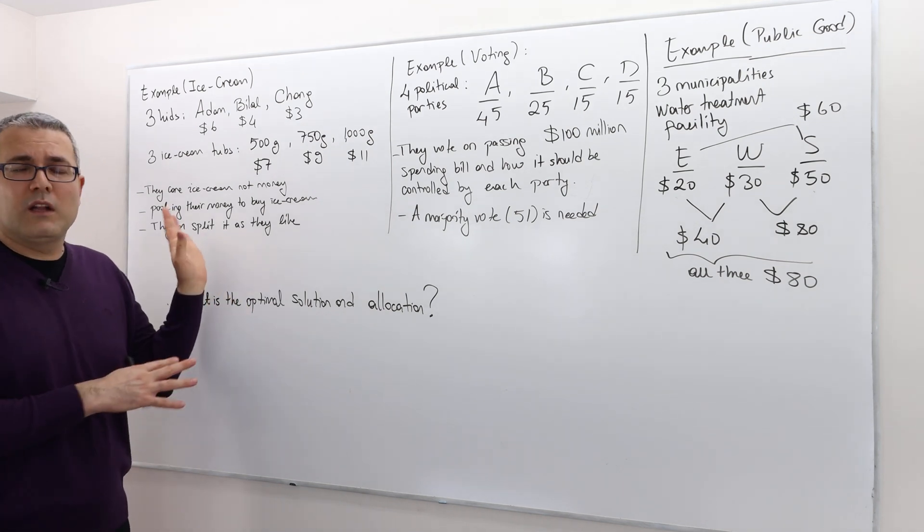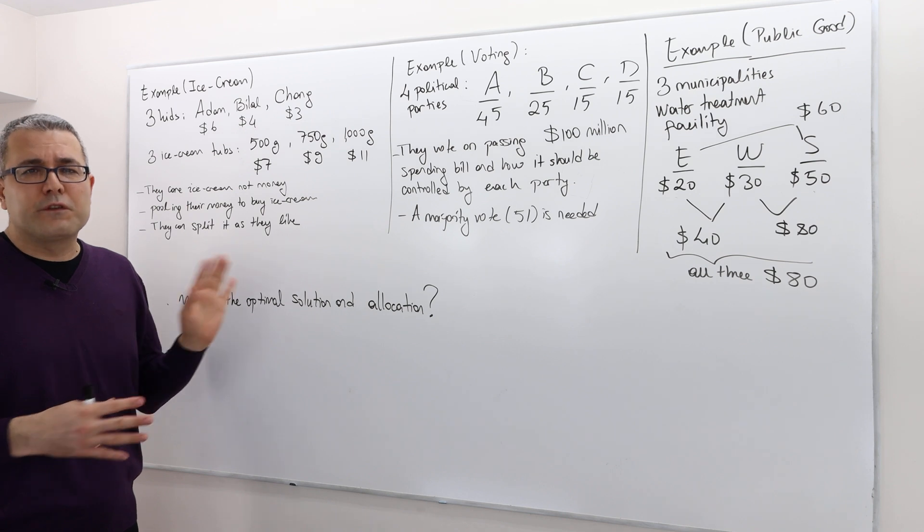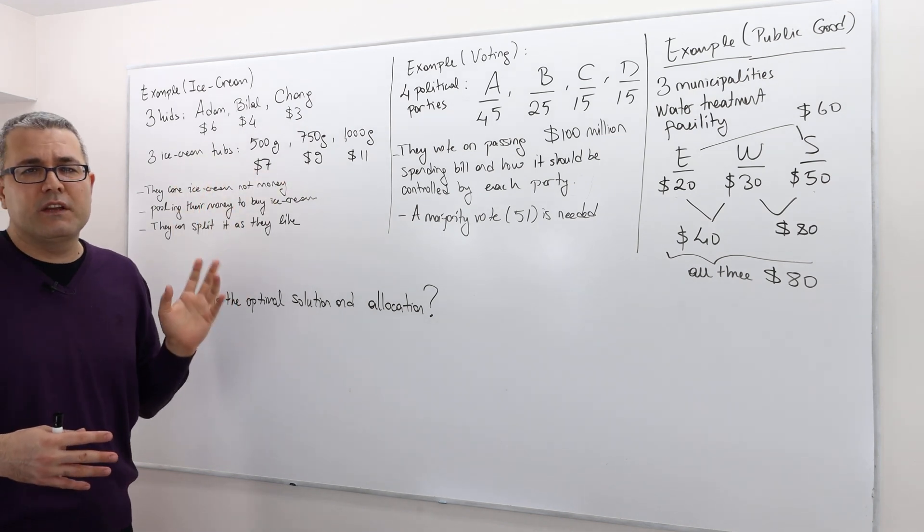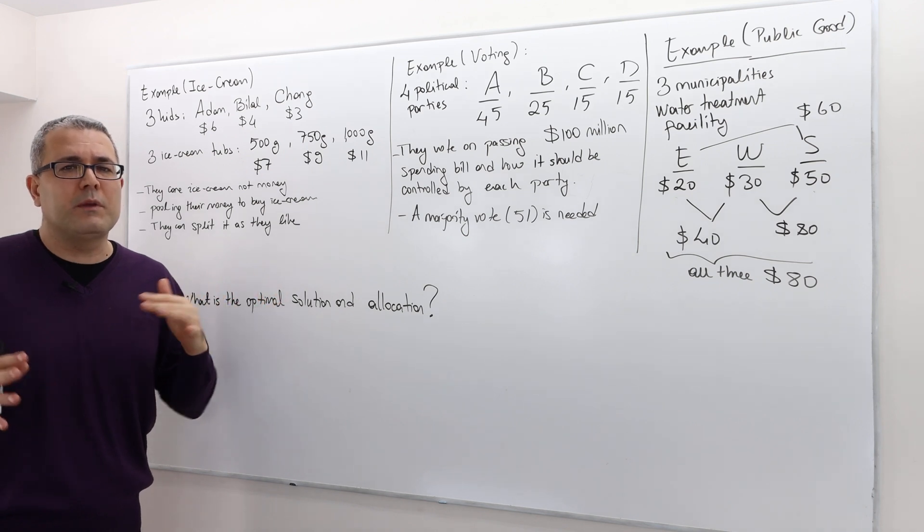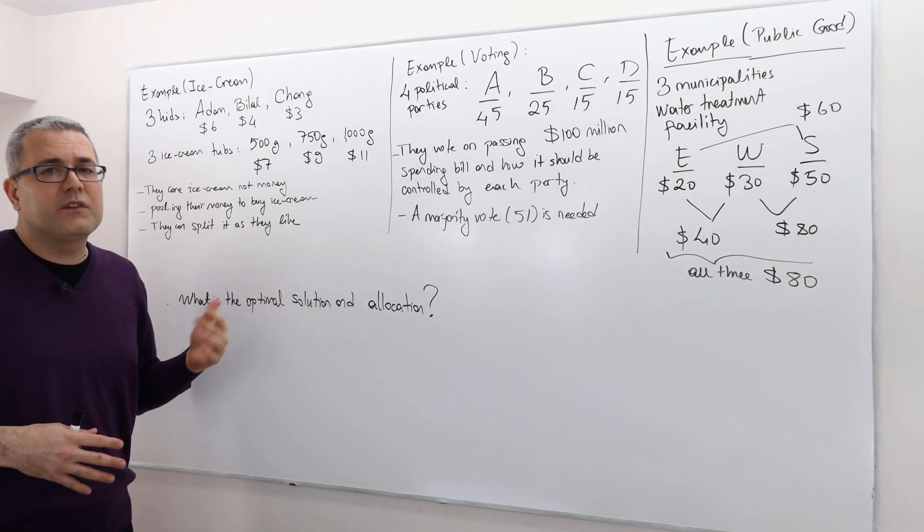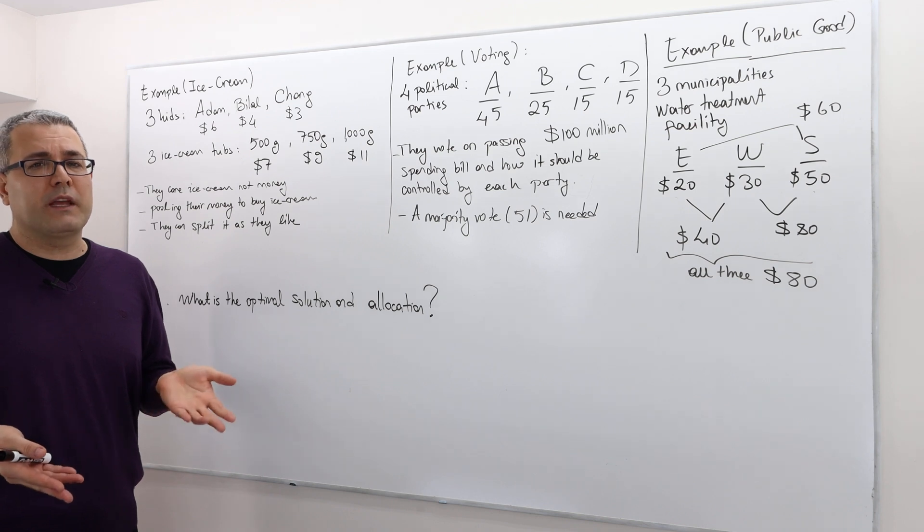So the question is: the kids are free to buy any one of these three tubs and they're free to divide the ice cream between themselves as they wish. What is the optimal way of doing it?